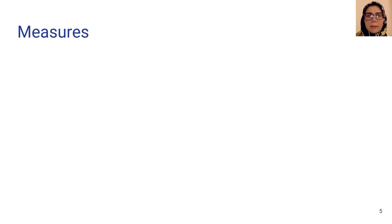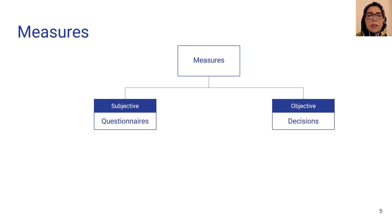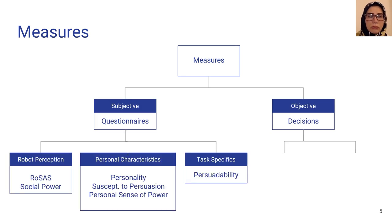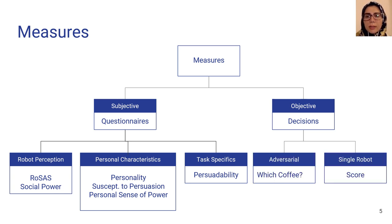In these studies, we attempt to measure different factors, both objective and subjective. As an instance of subjective measures, we use the ROSAS questionnaire to measure how people perceive the robot. And for objective measures, we focus on the decisions that the participants made during these studies.